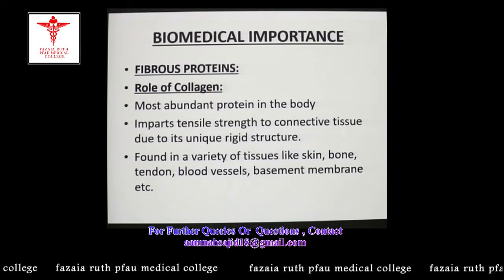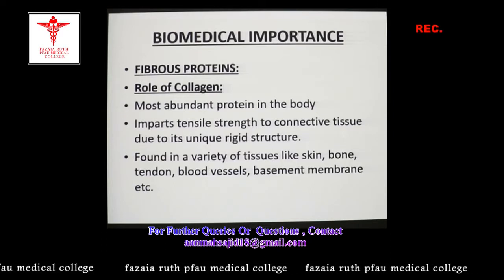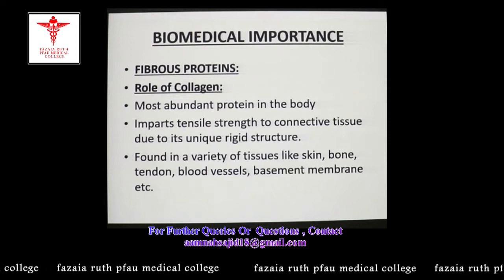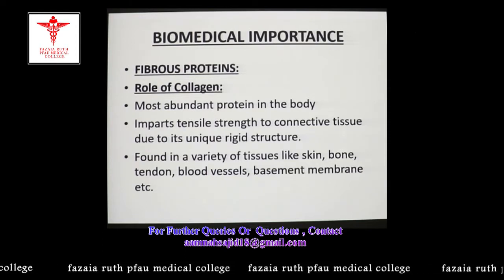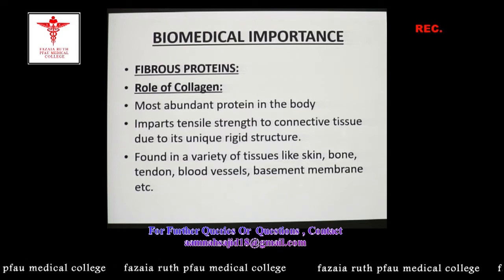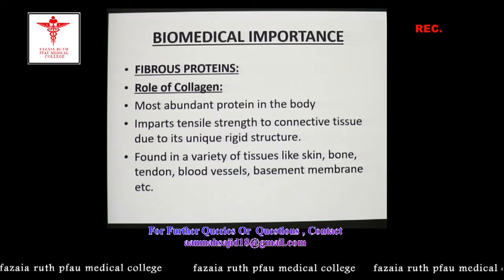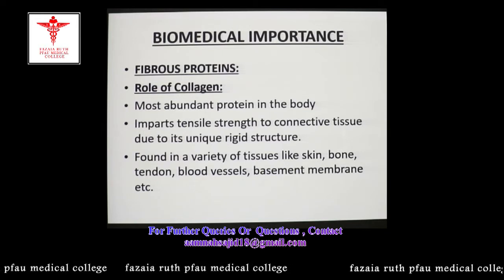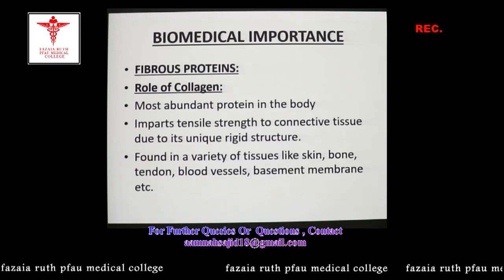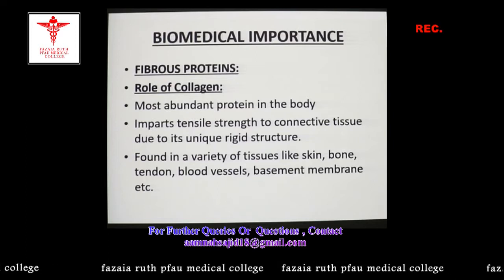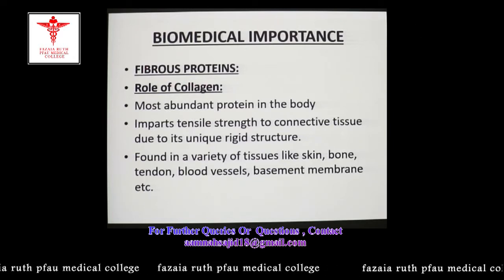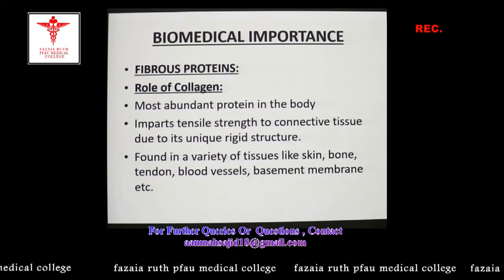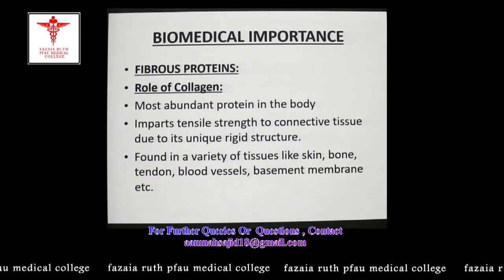Now we move on to the biomedical importance of different types of proteins. There are two major classes of proteins based on their structure: fibrous proteins and globular proteins. We will discuss first the biomedical importance of fibrous proteins. As the name indicates, fibrous proteins are those proteins which are in the form of fibers or fibrils, or they are elongated in shape.